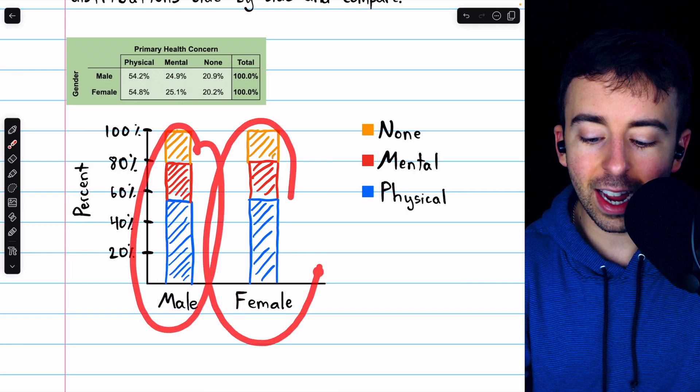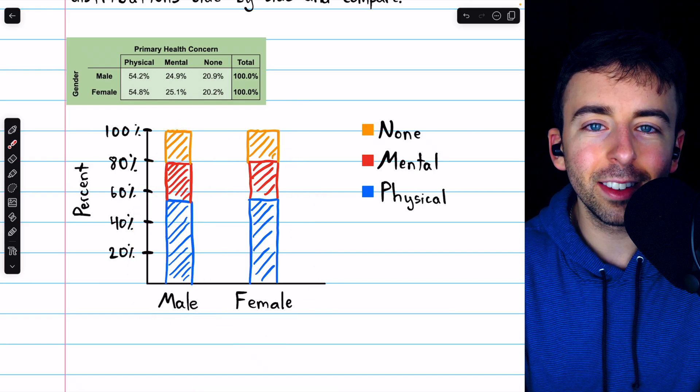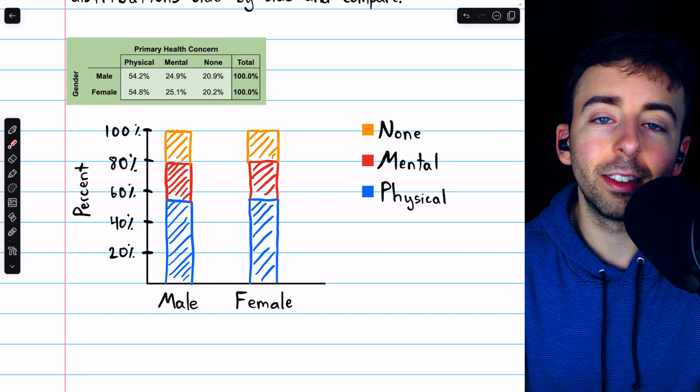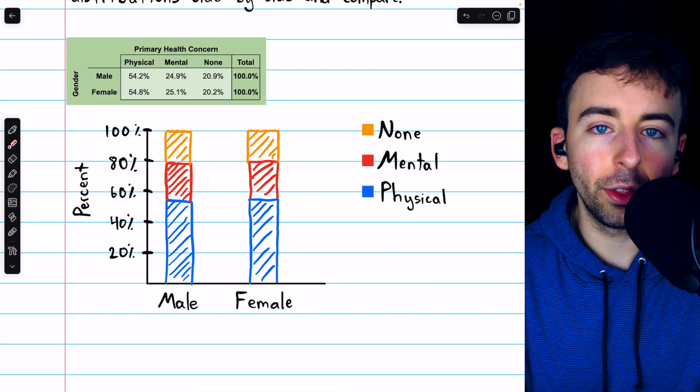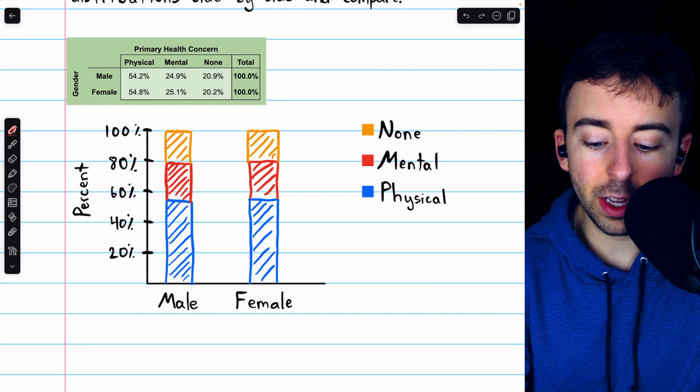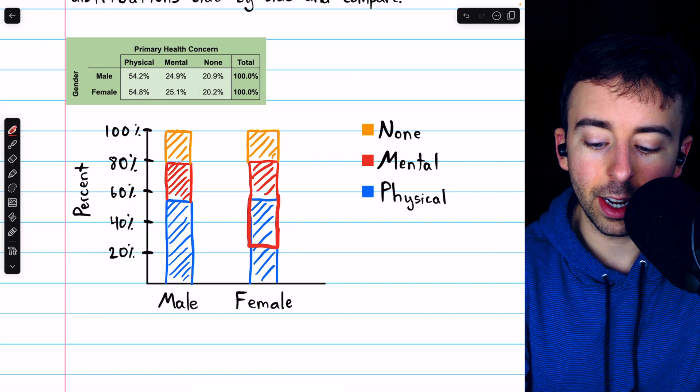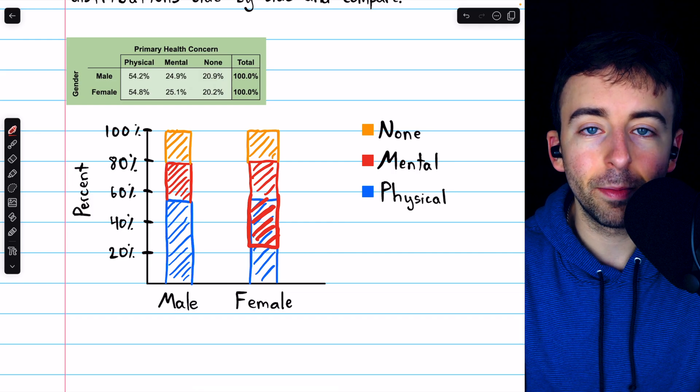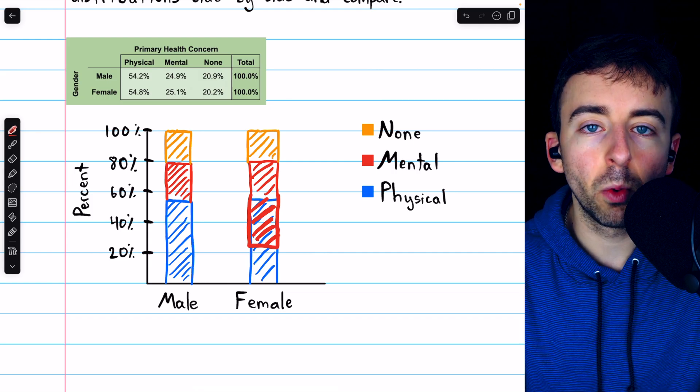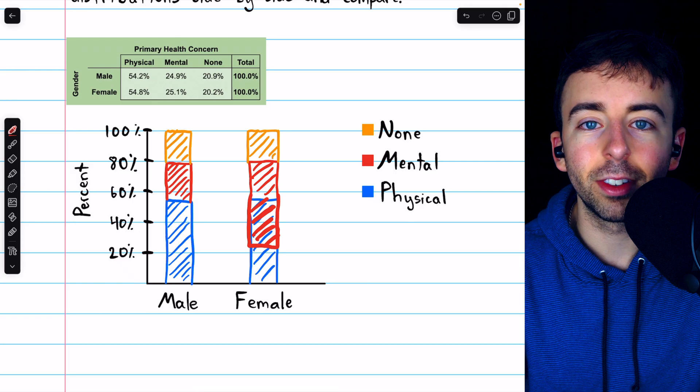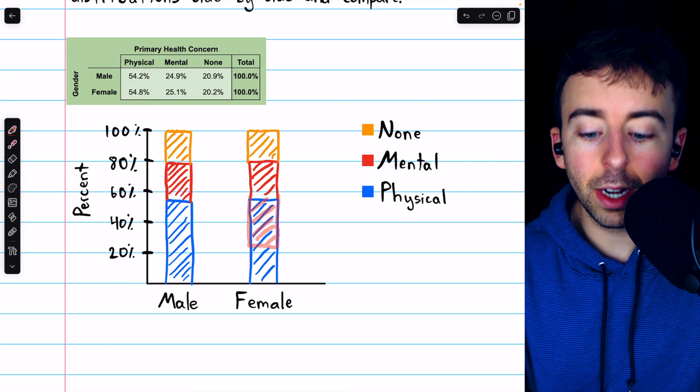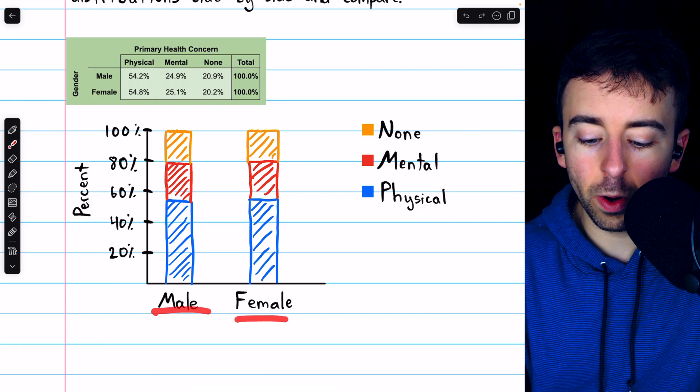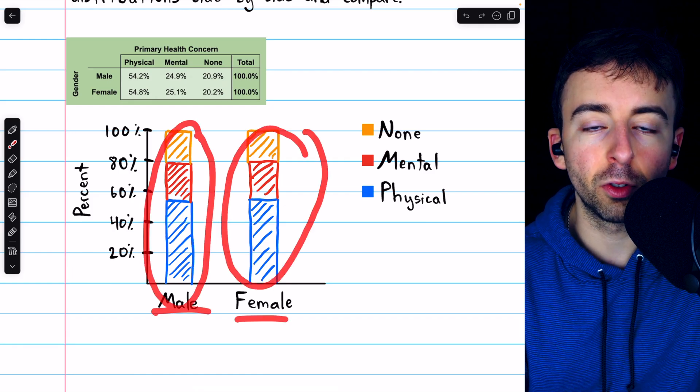In this case, the segmented bar chart for males and the segmented bar chart for females look about the same. This suggests that there's no association between sex and primary health concern. Of course, if in the female bar, the red segment was much bigger than in the male bar, that would suggest we have some evidence that, at least among the people we polled, females are more likely to have mental health concerns as their primary concern. But as it stands, the segmented bar chart gives us a quick way to see that the two categories have very similar distributions of primary health concerns.